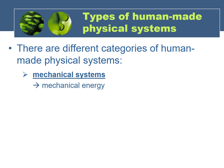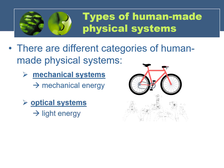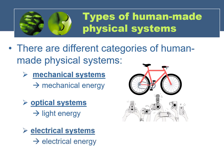There are mechanical systems, which rely on mechanical energy to function — an example would be a bike. We also have optical systems, which rely on light energy to work, and an example of that would be any type of camera. Finally, we also have electrical systems, which rely on electrical energy, and in fact most of the appliances in our homes would fall in this category — for example, an electric mixer for baking.